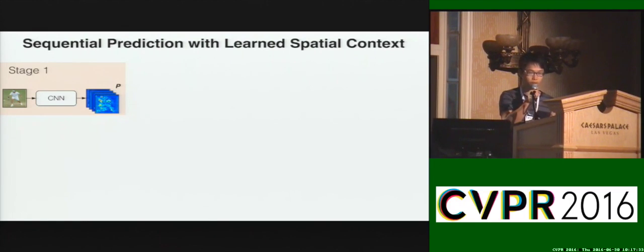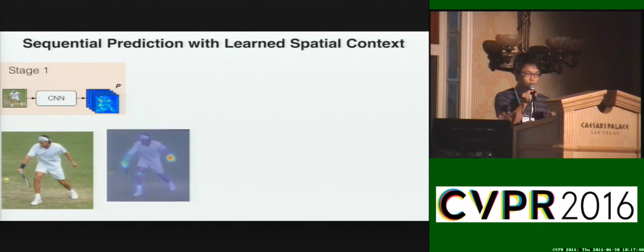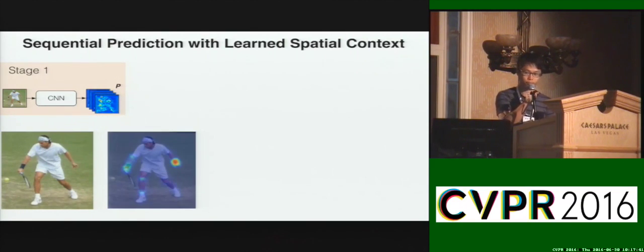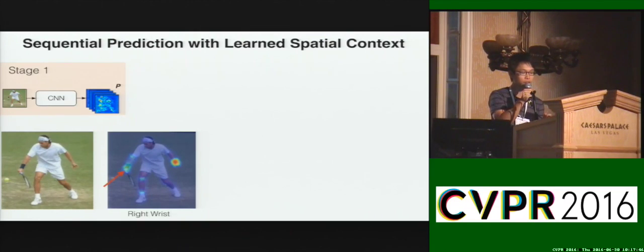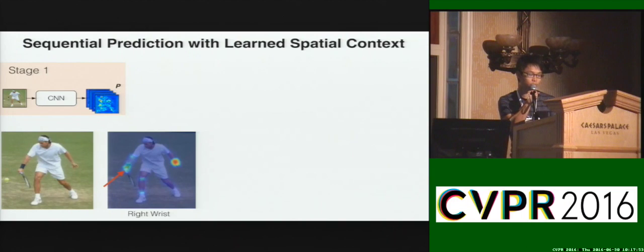In the first stage of the sequence, the input is an image. The output is a set of belief maps representing the uncertainty for the location of each body part. In this first stage, the left and right wrists are confused.